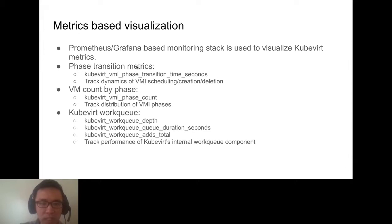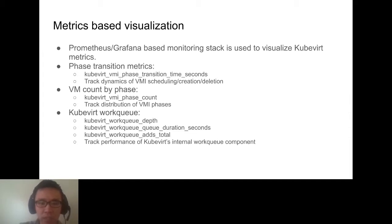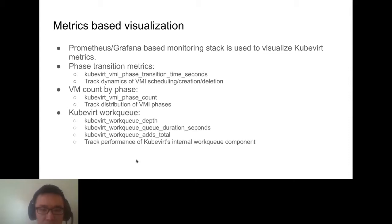The first metric is the KubeVirt VMI phase transition metric. This metric checks the dynamics of VM phases including scheduling, creation, and deletions. We also have VM phase count metrics, so we can know how VMs are distributed inside our zones — how many are in running phase, how many in pending, scheduling, and scheduled phase. There is also a KubeVirt work queue metric related to the internal performance of KubeVirt's work queue component, which we can use to track whether KubeVirt behaves well under large pressure.